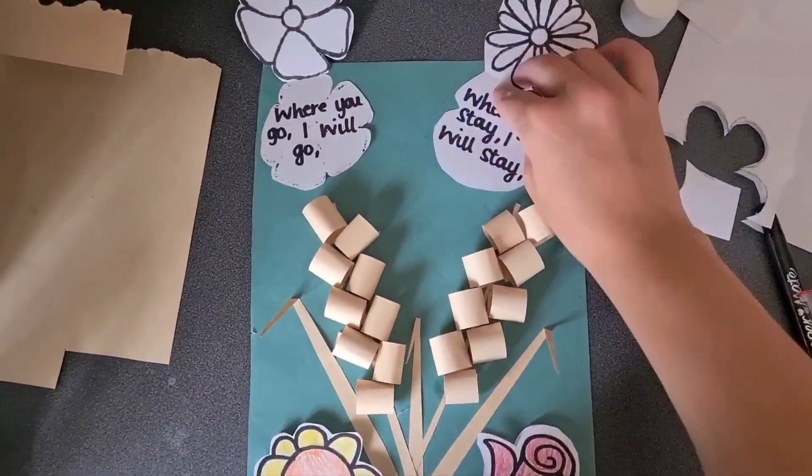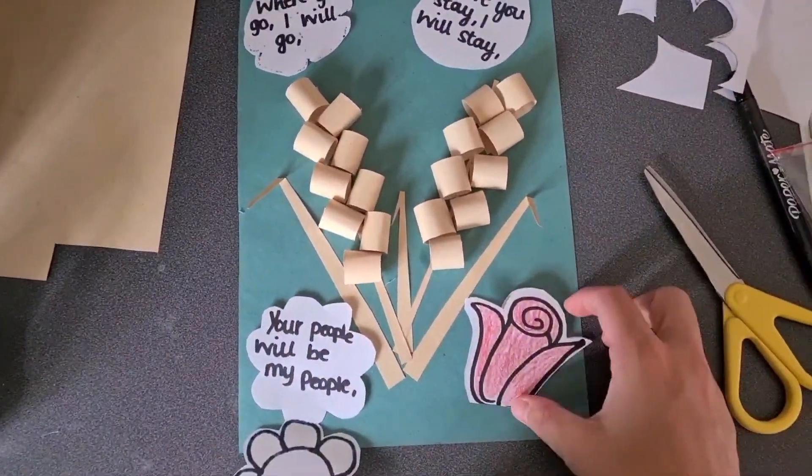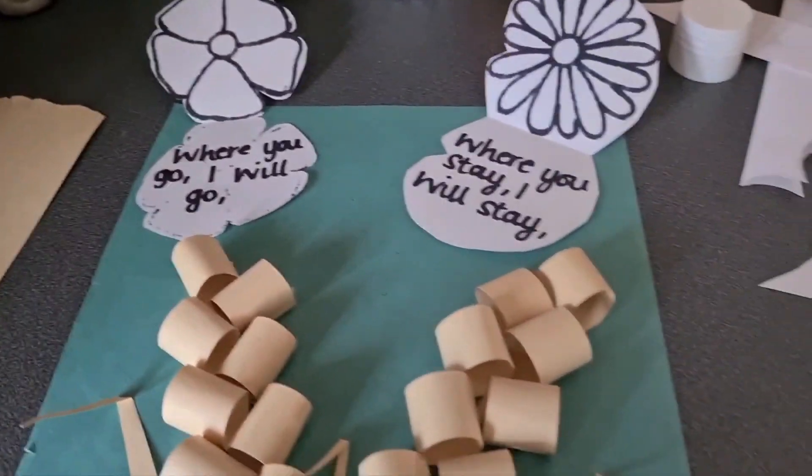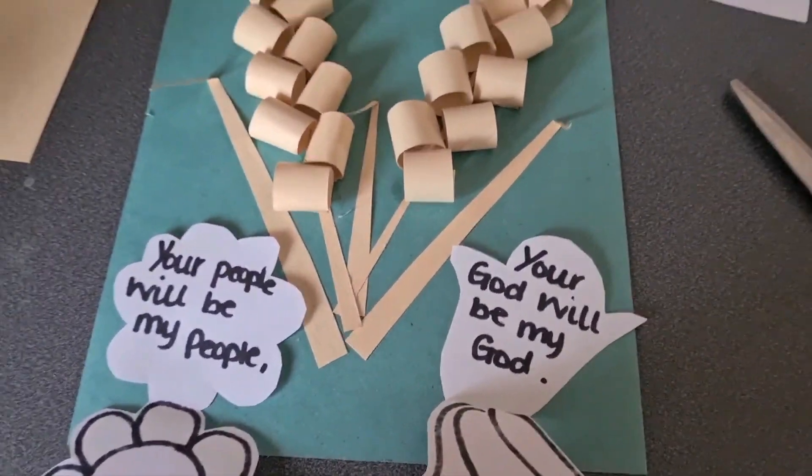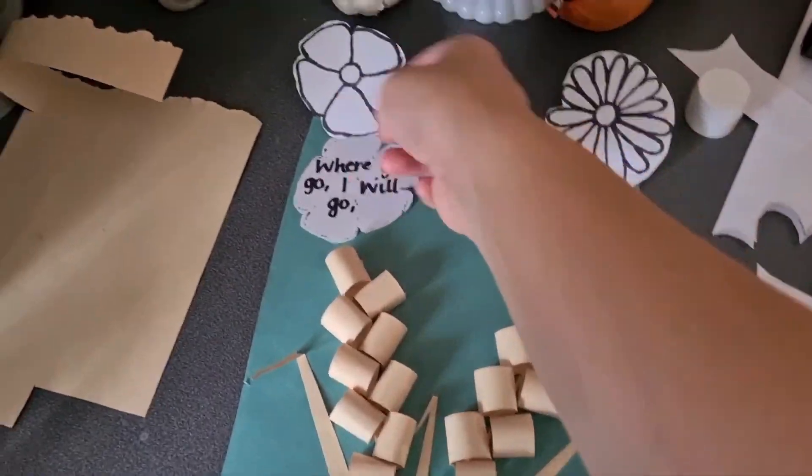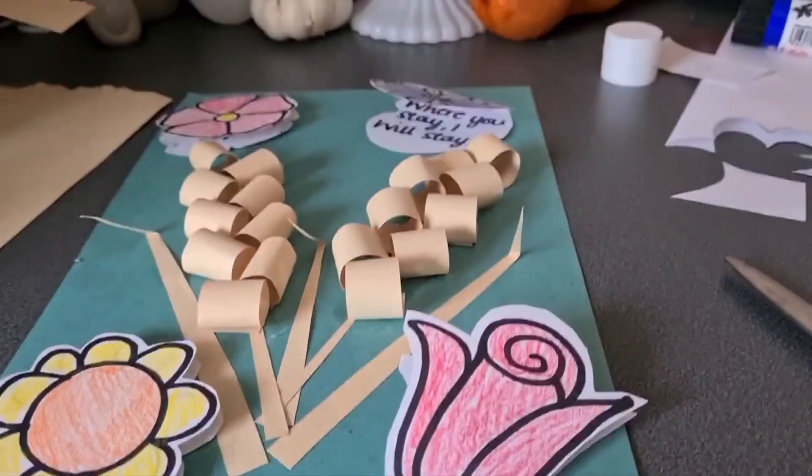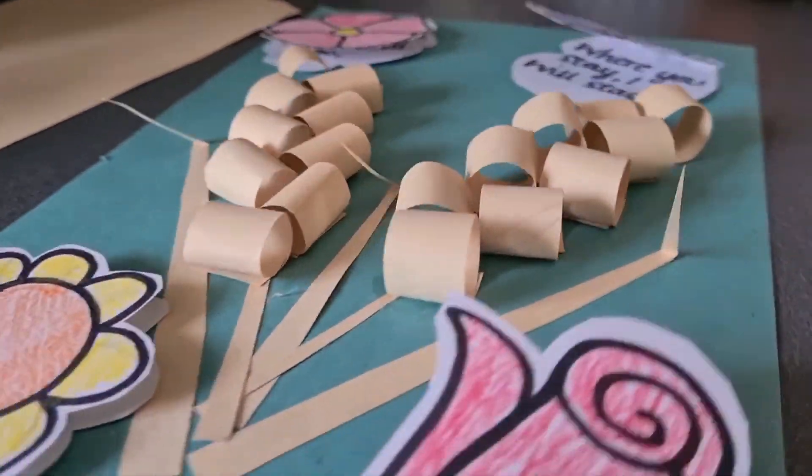And then on the inside, I just want you to write. I've chosen this part of the story of Ruth because I think it's a lovely part. Where you go, I will go. Where you stay, I will stay. Your people will be my people. And your God will be my God. That's what Ruth said to Naomi.